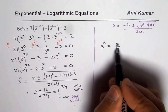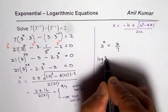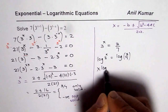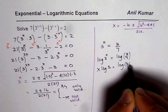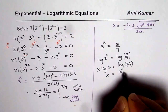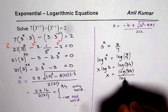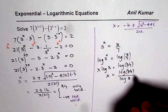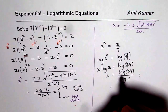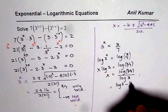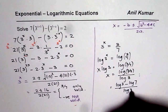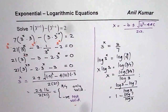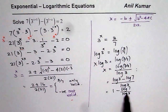To find x we take log of both sides: log of 3 to the power of x equals log of 3 over 7. Applying the power rule, x times log 3 equals log of 3 over 7, so x equals log of 3 over 7 divided by log of 3. We can also write this as log 3 minus log 7, all divided by log 3, which simplifies to 1 minus log 7 over log 3.